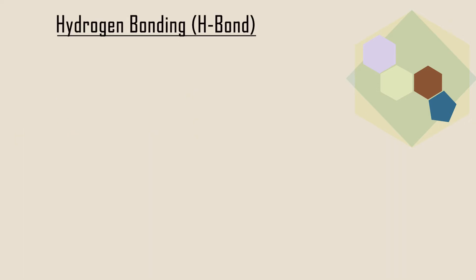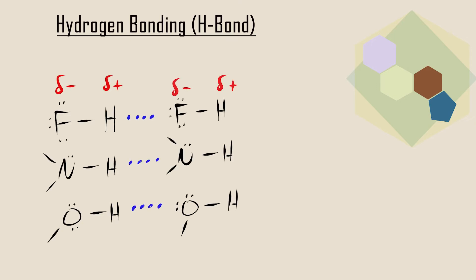A unique type of dipole-dipole force, called hydrogen bonding, or H bonding, arises between molecules that have a hydrogen atom bonded to a small, highly electronegative atom with lone electron pairs, such as nitrogen, oxygen, and fluorine atoms. The NH, OH, and FH bonds are very polar, so electron density is withdrawn from the H atom.